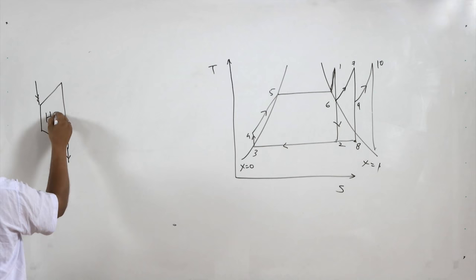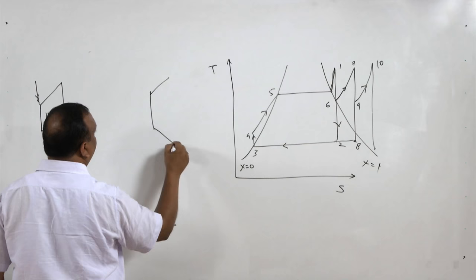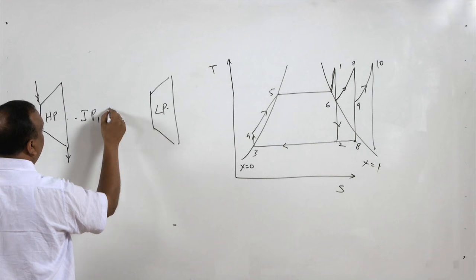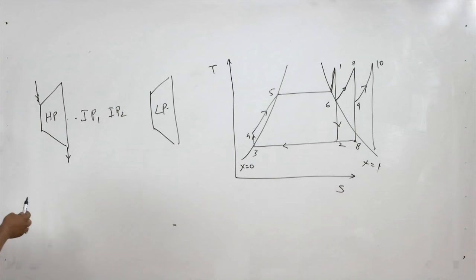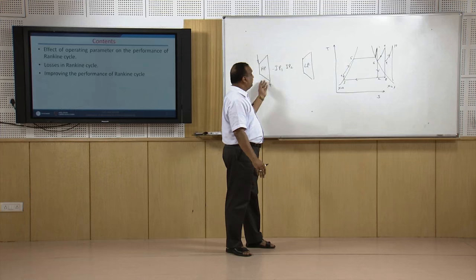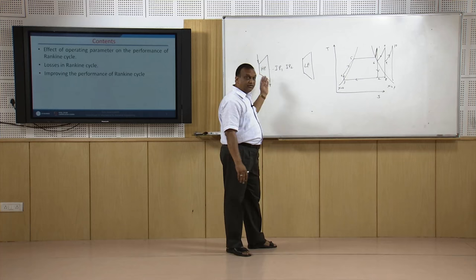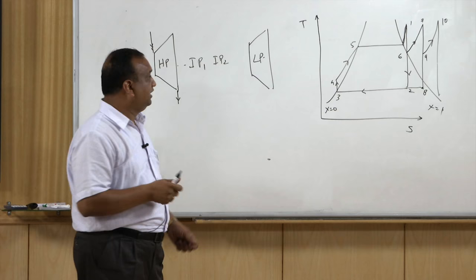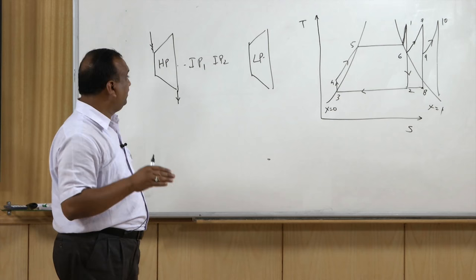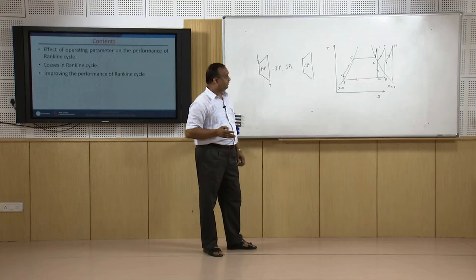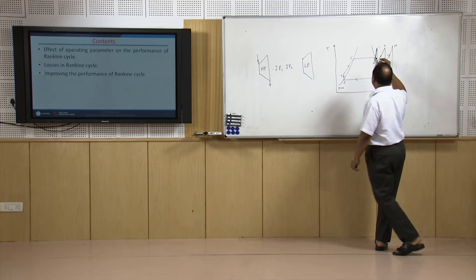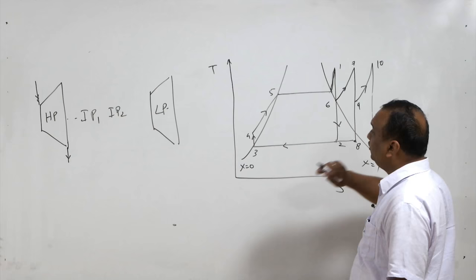In a multi-stage turbine arrangement there is a high pressure turbine, a low pressure turbine, and possibly intermediate pressure turbines (IP1, IP2, IP3). The high pressure turbine is the smallest in size because the specific volume of vapor at high pressure is low. As pressure reduces, specific volume increases, so turbine size increases. The low pressure turbine is therefore the largest.